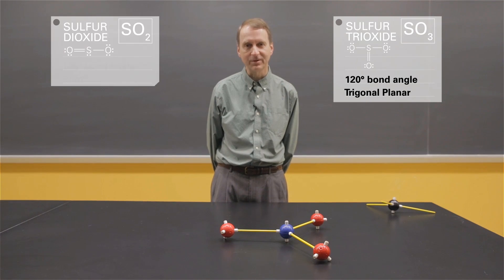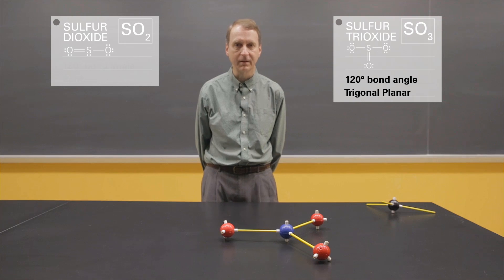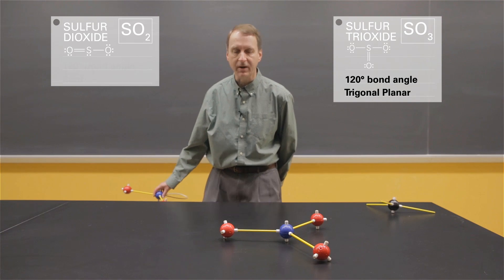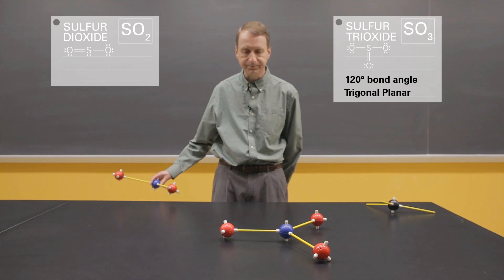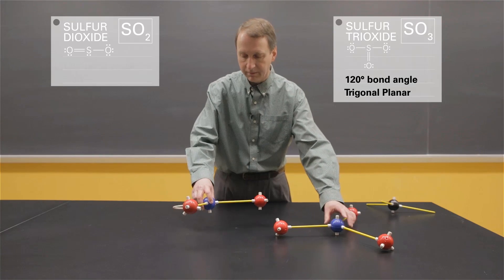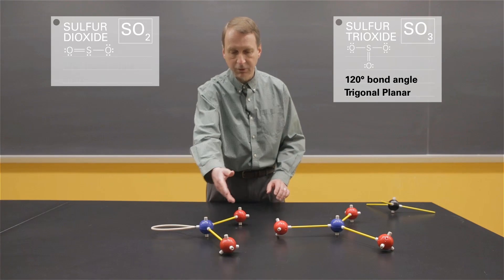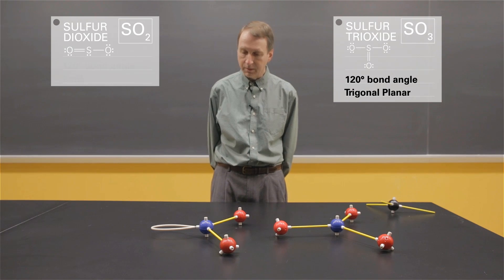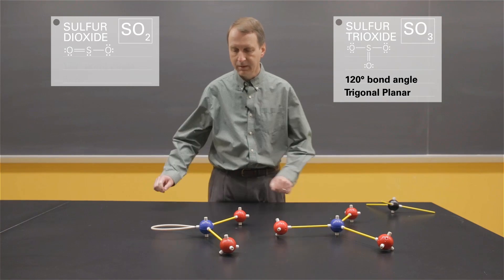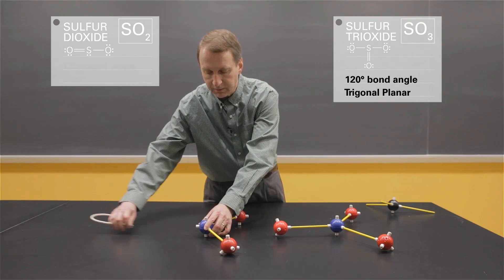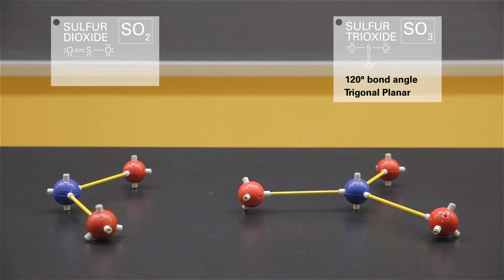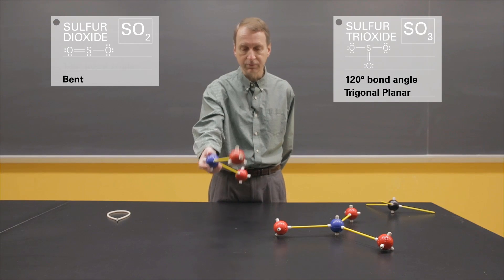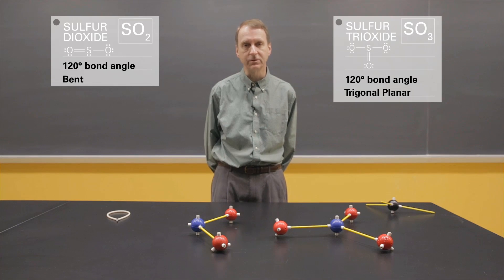Another molecule that has three electron groups is sulfur dioxide. The Lewis structure of sulfur dioxide shows a sulfur-oxygen double bond, a sulfur-oxygen single bond, and a lone pair. Here is a model of sulfur dioxide — two oxygen atoms and a lone pair. If I want to characterize the shape, I want to know where the atoms are, so I'm going to remove the lone pair. Notice that molecule is bent. With a 120-degree bond angle, bent would be the term I would use for the shape.